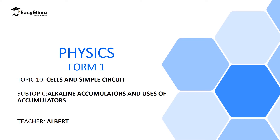Welcome to Eclimo Learning Simplified and welcome to this lesson. In the previous lesson we discussed lead acid accumulators, which use lead metal as the electrodes and sulfuric acid as an electrolyte. In this lesson we are going to discuss a different type of secondary cell: alkaline accumulators, which use an alkaline or basic solution as the electrolyte.